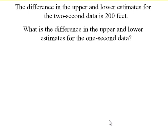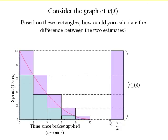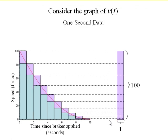What about for one second? Well, if you remember, our upper and lower estimates were 385 and 285, so they were 100 feet apart. Well, here they are for the two-second time interval. Here they are for the one-second time interval. So, notice we're always having this 100 multiplied by whatever our time interval is.